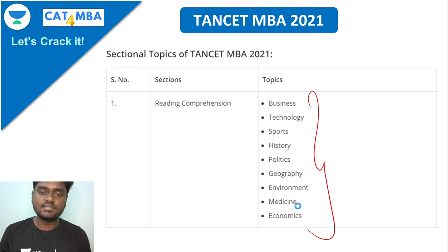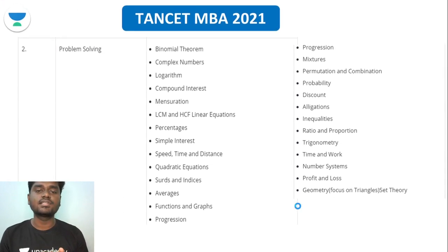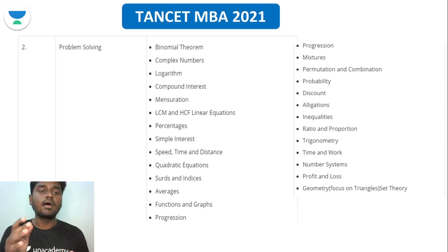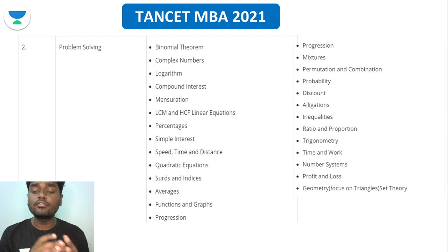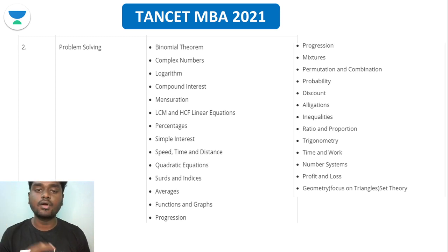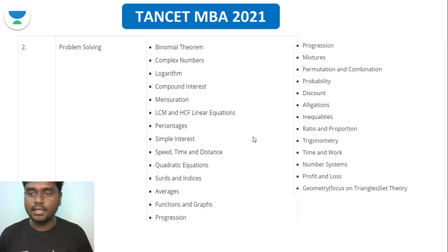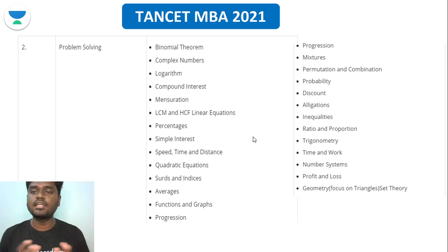The second section is Problem Solving — questions mostly related to aptitude. It covers around 15 to 20 important topics that you really need to concentrate on for the quant section. We'll be listing out all the important topics you need to completely go through.